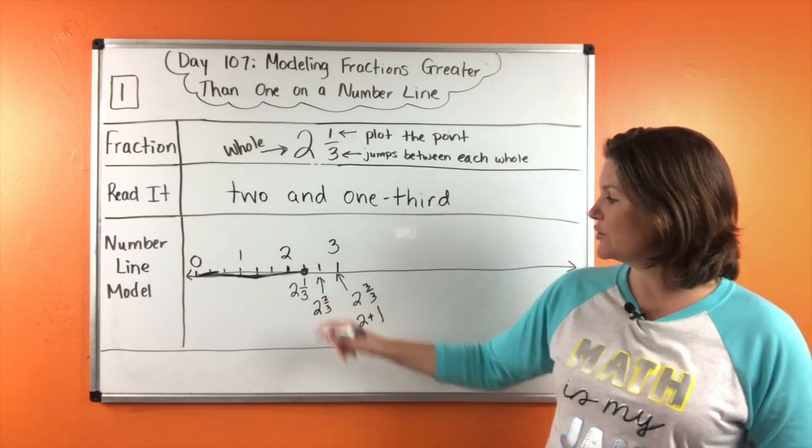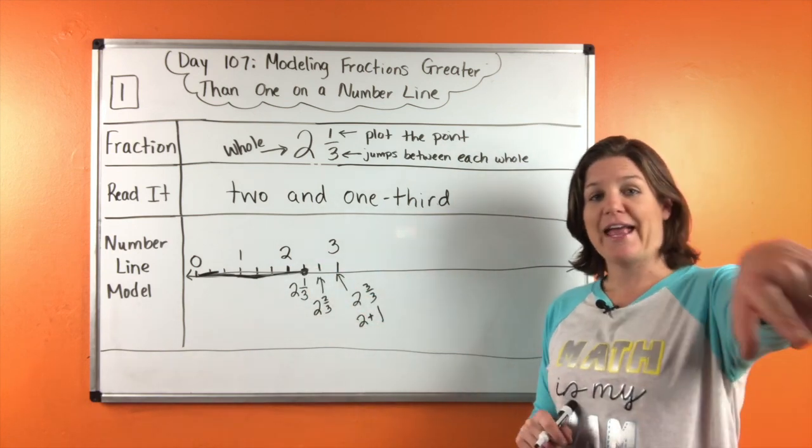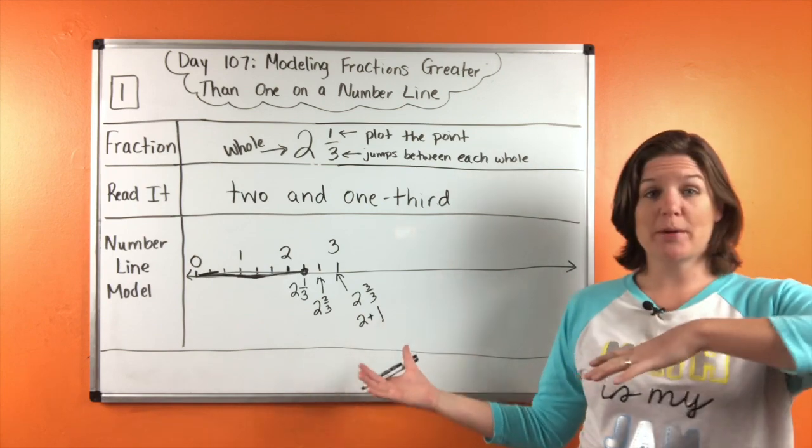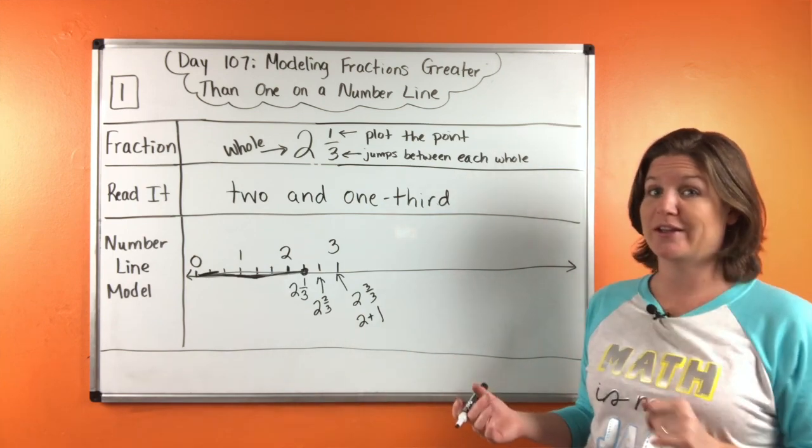So I can see the amount that we had to jump. Okay. So it's right there. Two and one third. And go ahead and get this down on your paper. And then let's check out number two when you're ready to go.